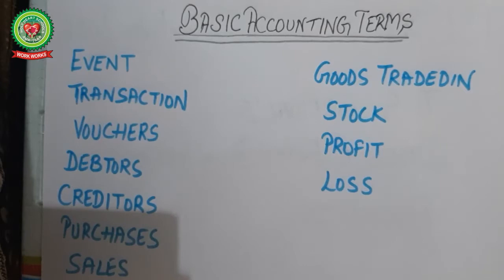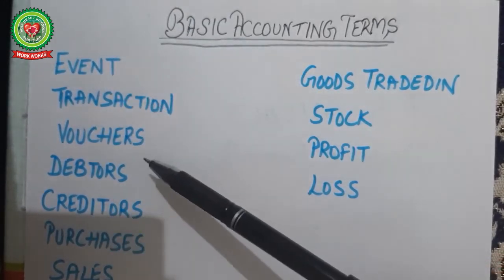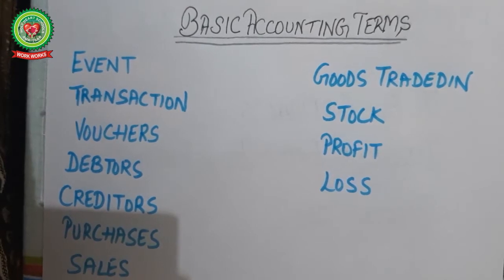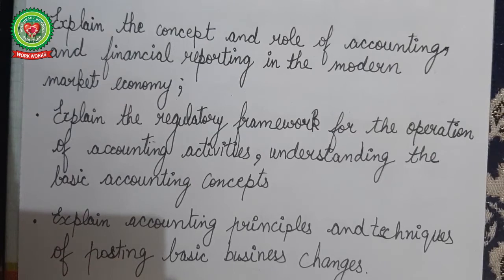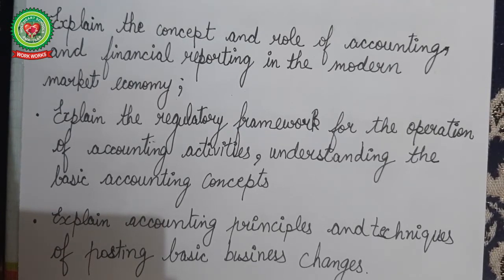Today we are going to study the following terms: event, transaction, vouchers, debtors, creditors, purchases, sales, goods, trading, stock, profit, and loss. We will learn about all these items in detail with relevant examples so that these accounting terms are clear to all of you. These accounting terms explain the concept and role of accounting and financial reporting in the market economy, and the principles which are to be followed in business.